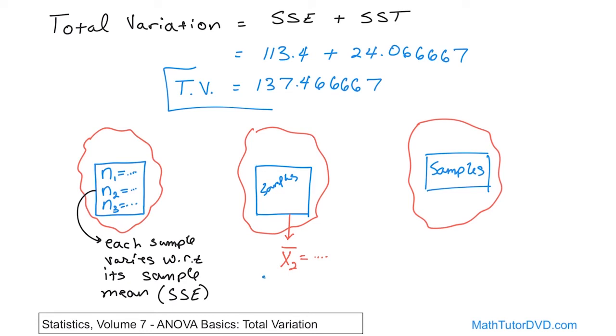And we can also take a look at how each sample mean varies with respect to the grand mean. So it's more of a global view of what the data is doing, right? And we call this concept sum of squares among treatments, all right?